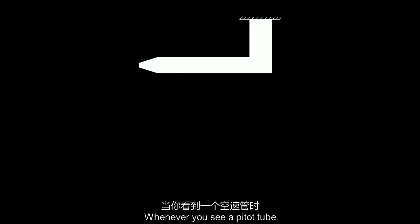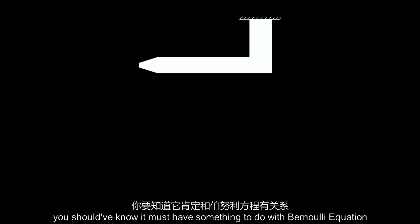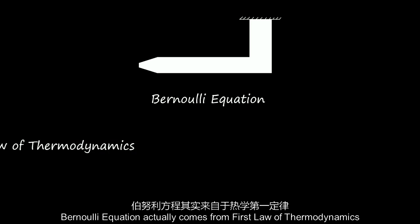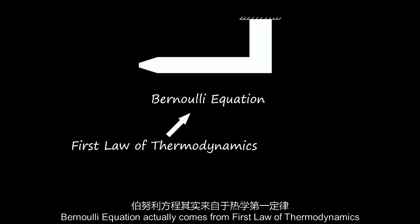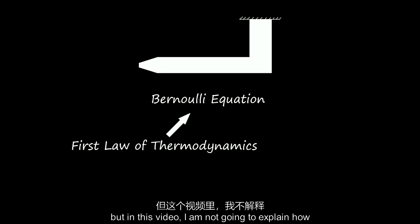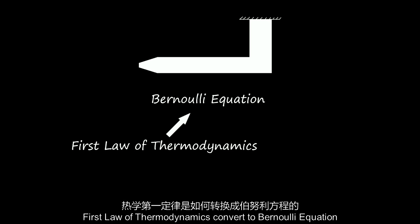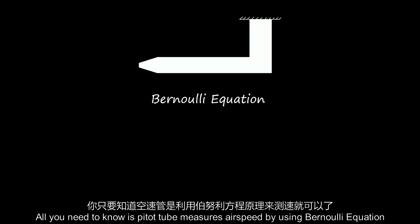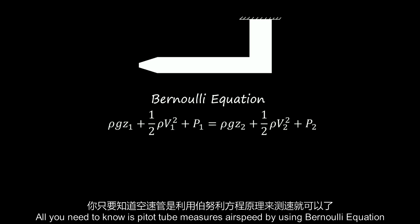But how exactly does a pitot tube measure airspeed? Whenever you see a pitot tube, you should know it must have something to do with the Bernoulli equation, which is the equation that always deals with flows. The Bernoulli equation actually comes from the first law of thermodynamics, but in this video I'm not going to explain how the first law of thermodynamics converts to the Bernoulli equation. All you need to know is that a pitot tube measures airspeed by using the Bernoulli equation.